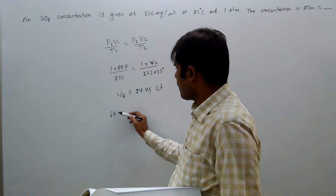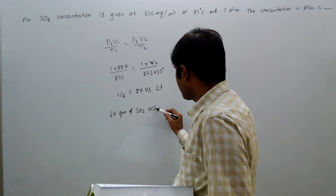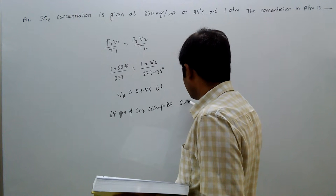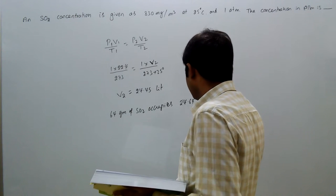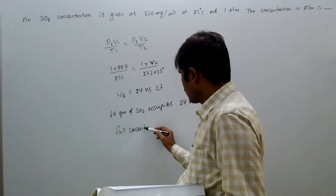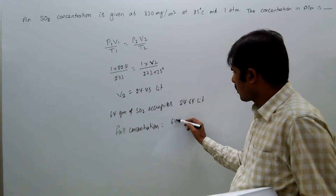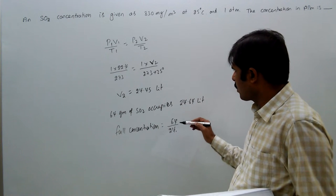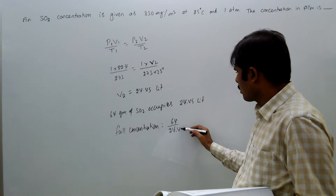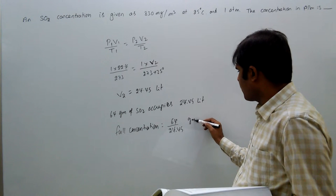That means 64 grams of SO2 occupies 24.64 liters. So, molar concentration equal to 64 by 24.45 grams per liter.